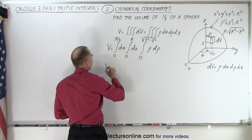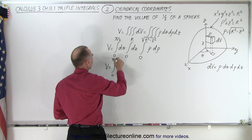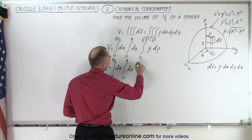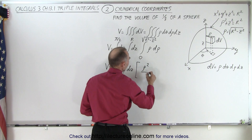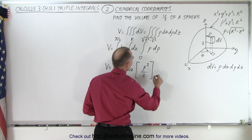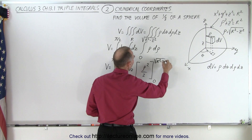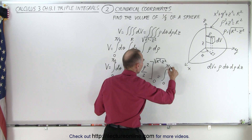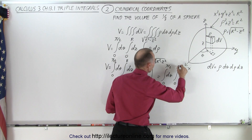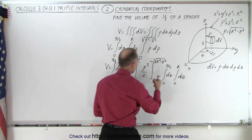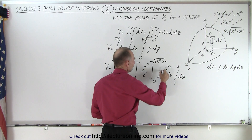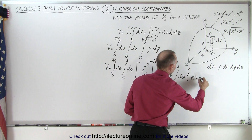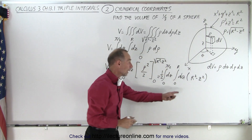So let's go ahead and solve the problem. We have V equal to the integral from 0 to π/2 of dθ, times the integral of dz from 0 to r, and then the integral of ρ dρ, which becomes ρ²/2 evaluated from 0 to √(r² − z²). When we plug in those values, we get the integral from 0 to π/2 of dθ, times the integral from 0 to r of dz, and we can take the 1/2 out front. Plugging in, ρ² becomes r² − z².